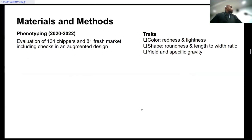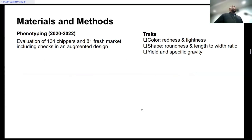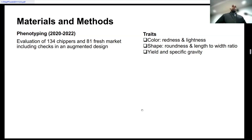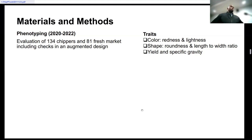Our materials were evaluated for three years, covering 134 chips and one fresh market class variety, including chips varieties. This was done in an augmented design with row-column information. The traits we looked at are redness and lightness as color traits, and roundness and length-width ratio as shape traits. We also incorporated non-quality traits like yield as a reference, since one of the objectives is to carry out index selection to select good autotetraploid clones for the chips market class, where roundness in combination with yield are key traits.